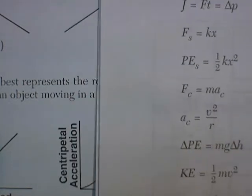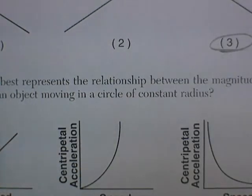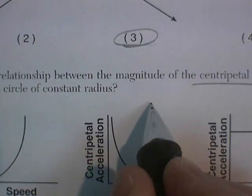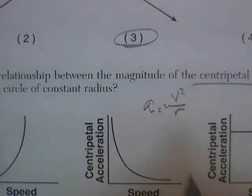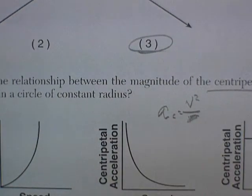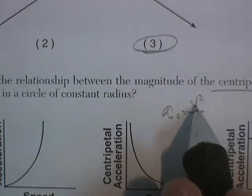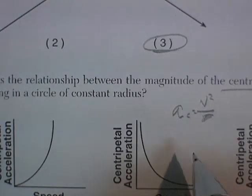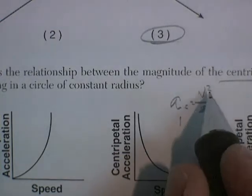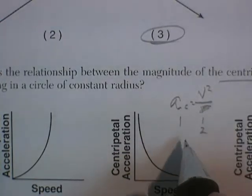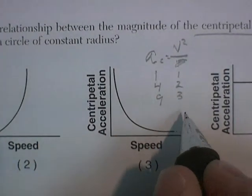Centripetal acceleration equals V squared over R. Constant radius, so R stays the same. Basically, what's the relationship between centripetal acceleration and velocity? Well, velocity is squared. So we can put in some pretend numbers: if velocity is 1, centripetal acceleration would be 1; velocity is 2, centripetal acceleration would be 4; velocity is 3, centripetal acceleration would be 9. So if we're going to make a little graph of that.